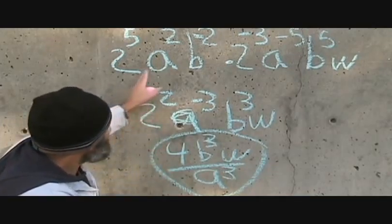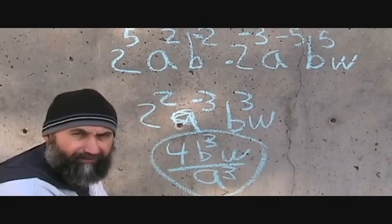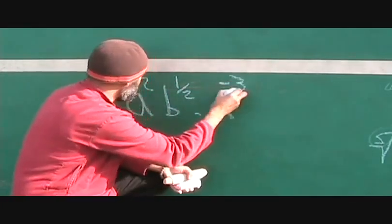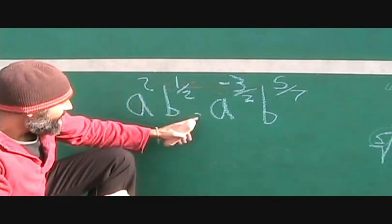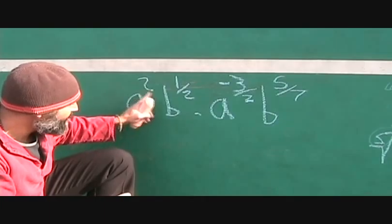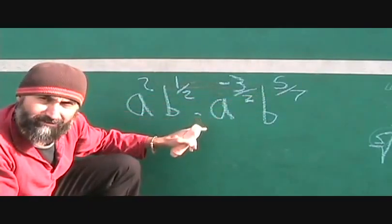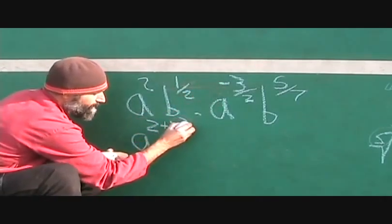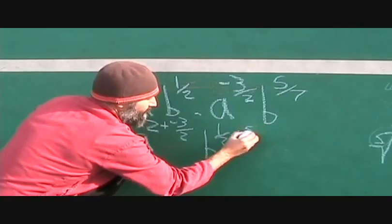So when you're multiplying or dividing bases with exponents, you just add or subtract the exponents depending on whether you're multiplying or dividing. Now let's do a more complicated exponent fraction. Say you have a squared times a to the negative 3 over 2, and b to the half times b to the 5 over 7. This is multiplication, so anything with the same base — you combine their exponents. For a: a squared times a to the negative 3 over 2, you're just adding those. For b: b to the half times b to the 5 over 7, you're adding those too. So this becomes a to the 2 plus negative 3 over 2, and b to the half plus 5 over 7.